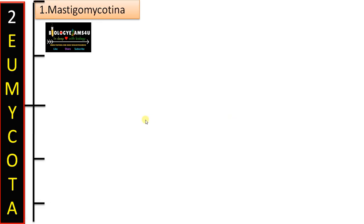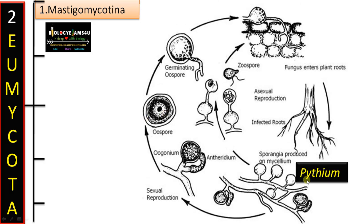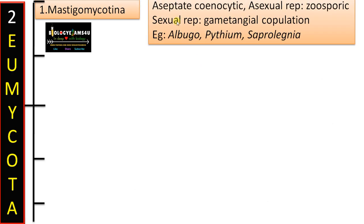Eumycota is divided into five subdivisions. The first one is Mastigomycotina, considered as primitive. Taking the example of Pythium: it is aseptate — without septa — in a multinucleate coenocytic condition. There are motile spores; asexual reproduction is by zoospores and sexual reproduction by gametangial copulation, with oogonium and antheridium. These fungi are often called zoosporic fungi, as a flagellated stage represented as zoospore is present. Examples include Albugo, Pythium, and Saprolegnia.